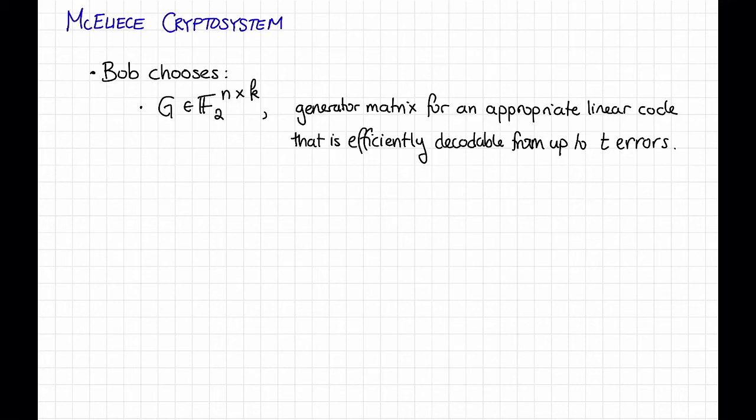But again, the details won't be important for this discussion. Okay, so Bob chooses his generator matrix G.